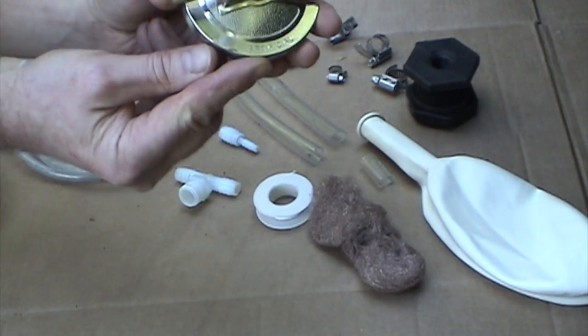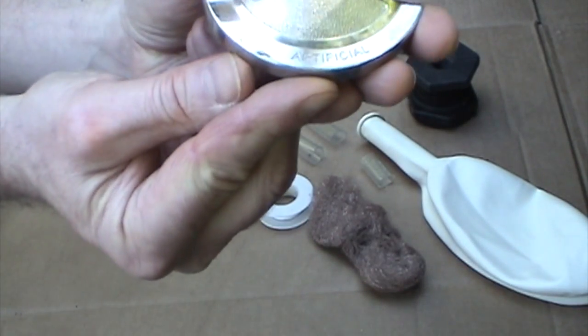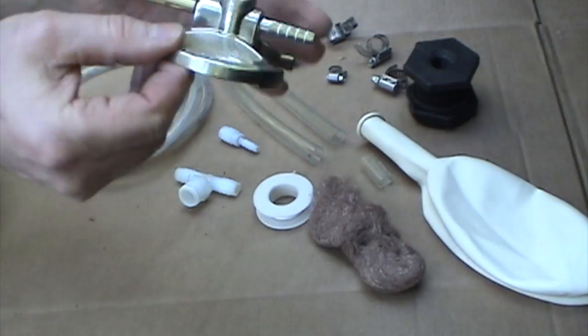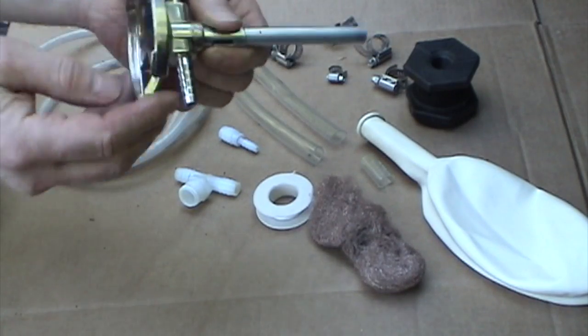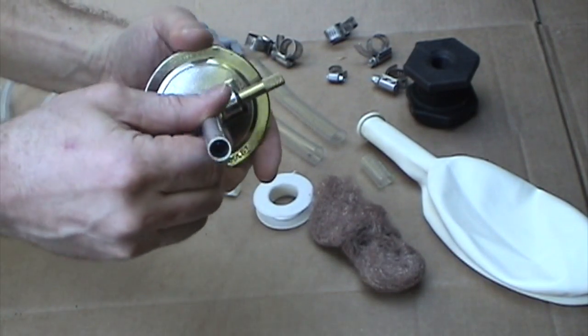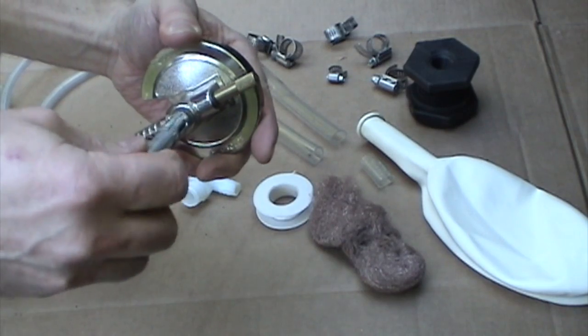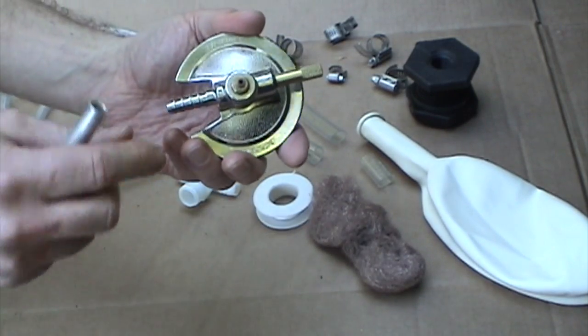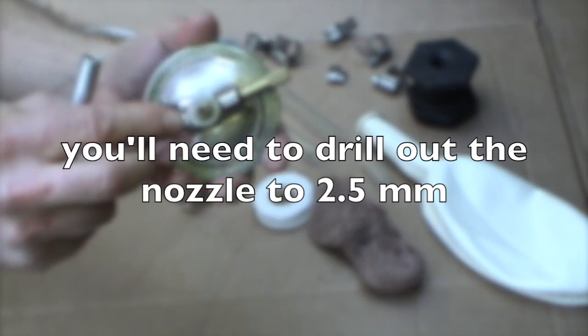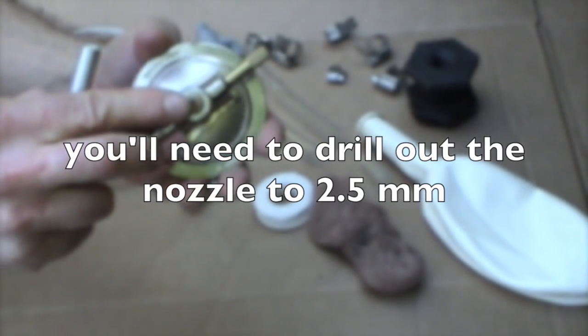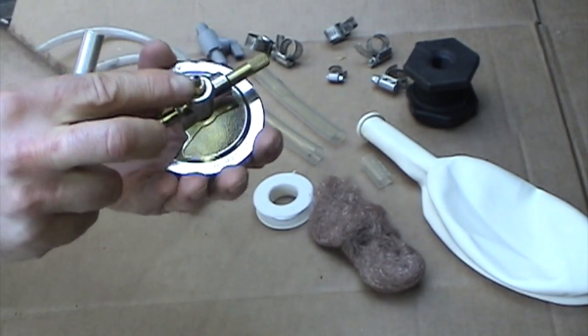And finally a Bunsen burner. This will be used to test the gas and you need to get one that says artificial gas on it. On this one it says artificial gas and it's got a 1.3 millimeter nozzle. These can be adjusted fairly easily if you need more gas and you can very easily drill out this bronze nozzle.